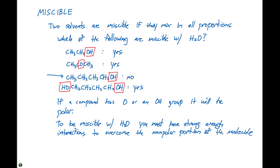So, in this case right here we don't have enough of a polar moment to be mixing in all proportions. Whereas for our next molecule here we have the same number of carbons, but we do have two polar regions of the molecule which will help that become more miscible.